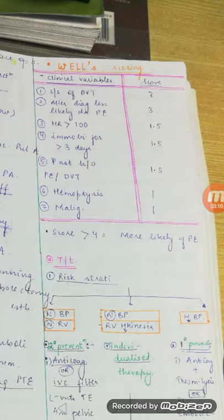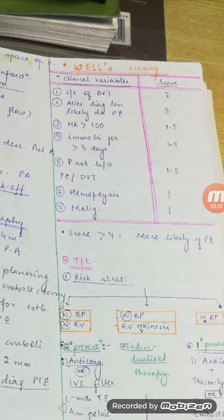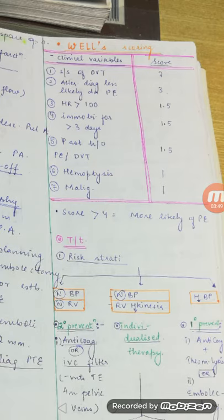To summarize the Wells criteria: DVT signs or symptoms scores 3; alternative diagnosis less likely scores 3; past history of PE or DVT scores 1.5; heart rate greater than 100 scores 1.5; immobilized more than three days scores 1.5; hemoptysis scores 1; malignancy scores 1. If the total is more than 4, pulmonary embolism is likely.